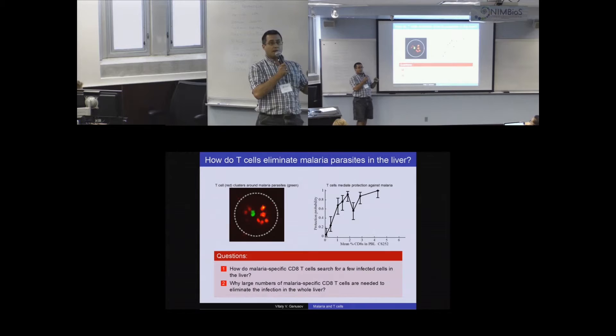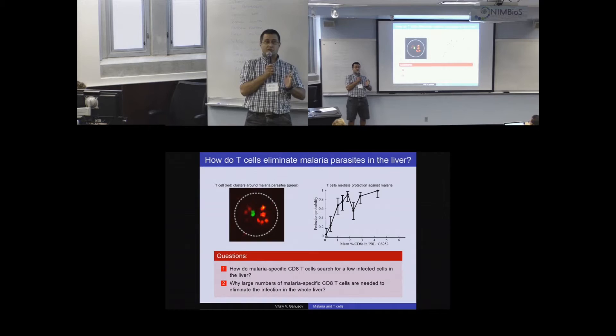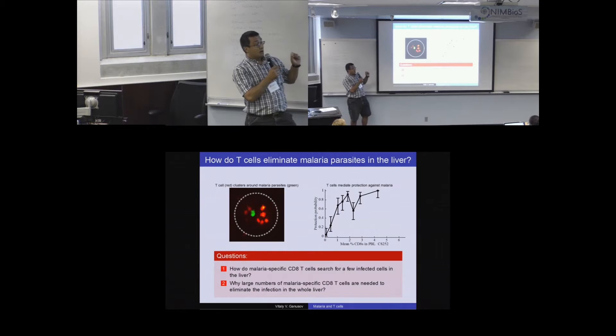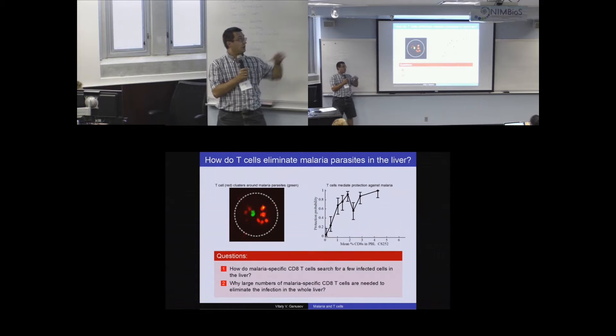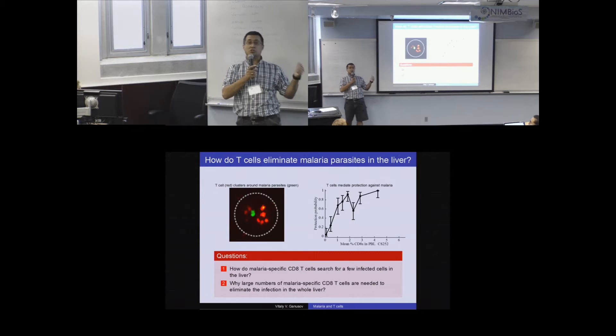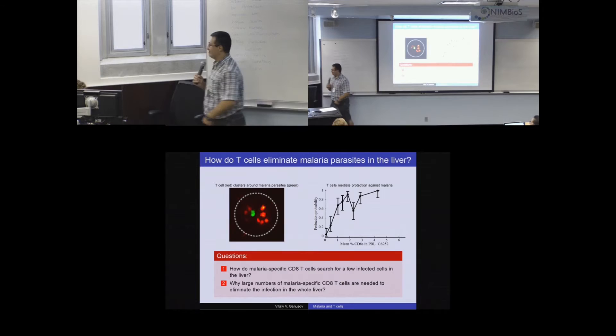The liver has approximately 100 million hepatocytes — just under that benchmark of a billion cells. The question I'm asking is: how do vaccine-induced T cells remove all parasites from the whole liver, and can we predict how many T cells need to be induced by vaccination to achieve protection?